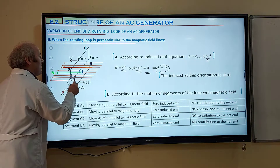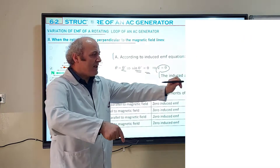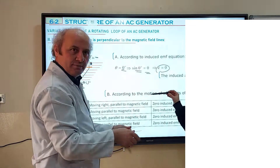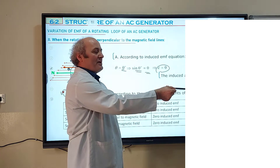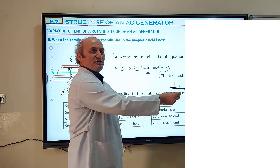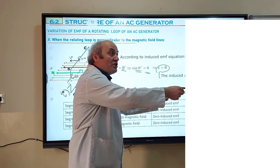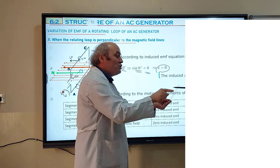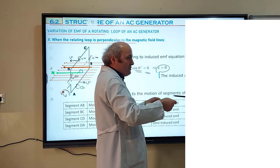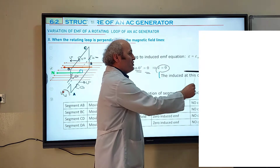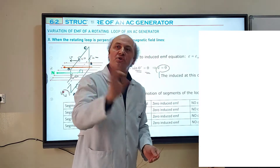These two segments — BC and AD — never cross the magnetic field lines. When the loop is perpendicular to the magnetic field, no segments are crossing the magnetic field lines at all. Neither BC nor AD ever cross — and the other two segments AB and CD also have zero induced EMF at the perpendicular position because their velocity is parallel to the magnetic field lines.